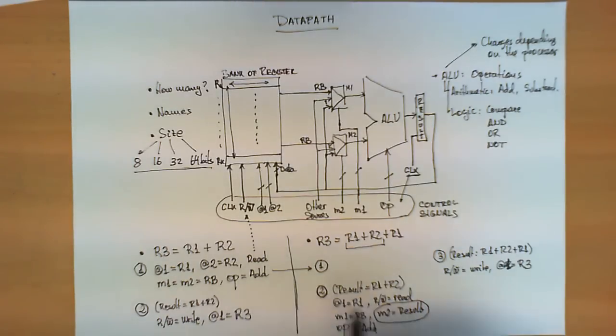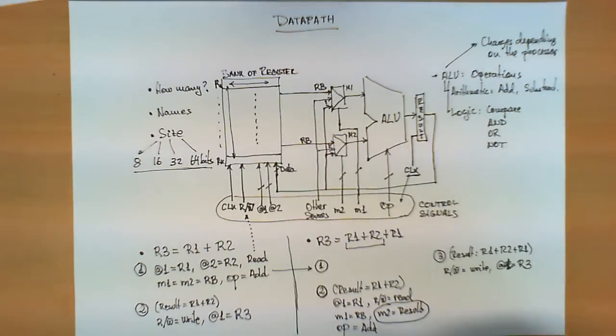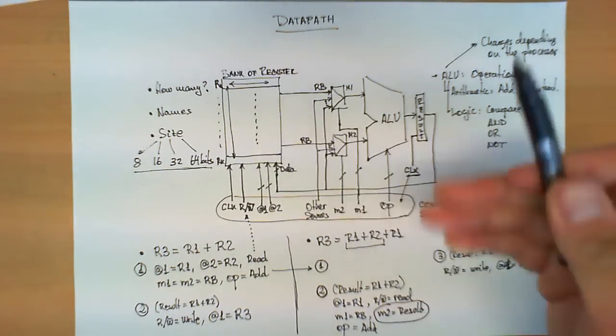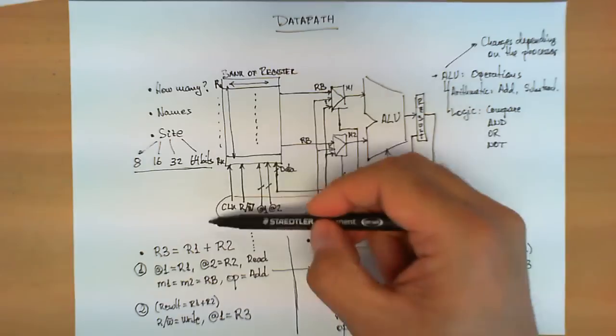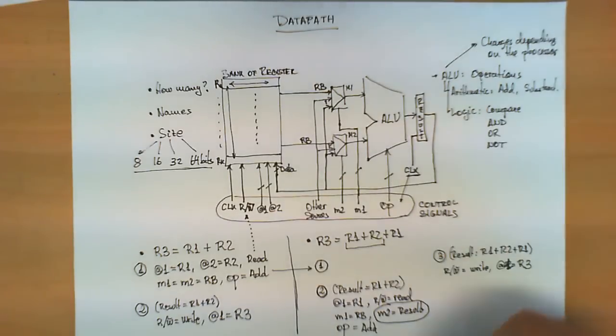These are two examples of how this data path can carry out operations based on the bank of registers, control signals, and the ALU.